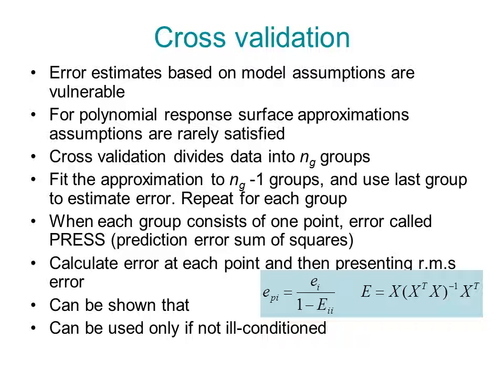And so what you are doing is you are taking ny minus one points, fit the data, calculate the error of that fit at the missing point, you repeat for every point, and then you calculate an RMS error which is called the PRESS RMS. If you are doing a response surface there is actually an analytical formula: EPI is equal to EI over one minus HII that will give you that error without actually doing the fit.